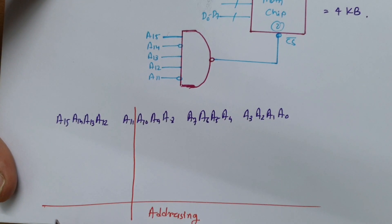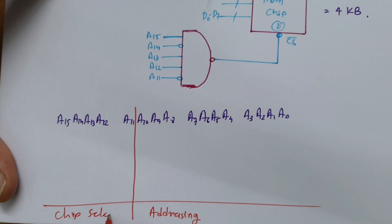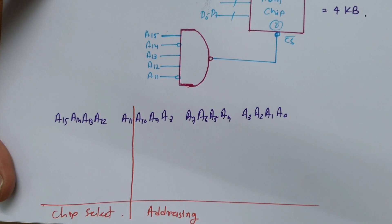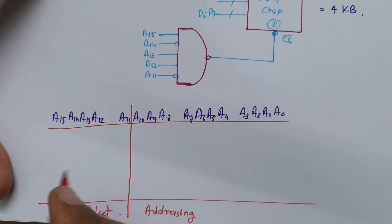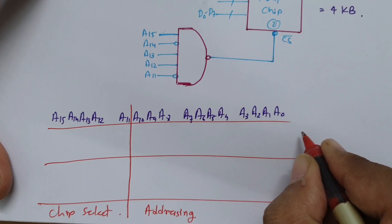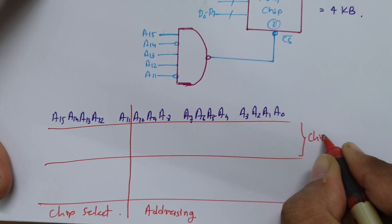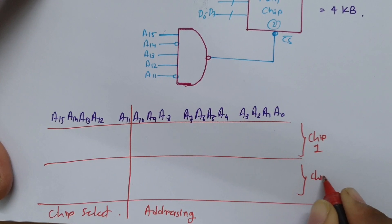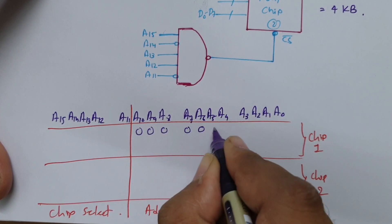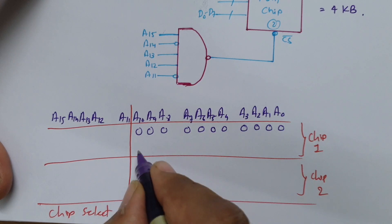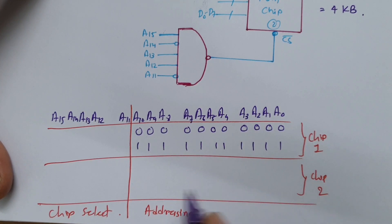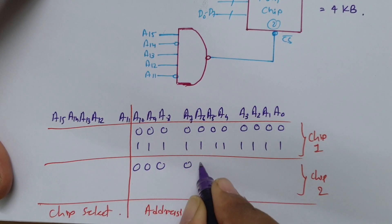The remaining lines — A11 and above — are used for chip select. For both chips, the addressing portion goes from all zeros (000) to all ones (111), representing the starting and ending addresses within each chip's address space.